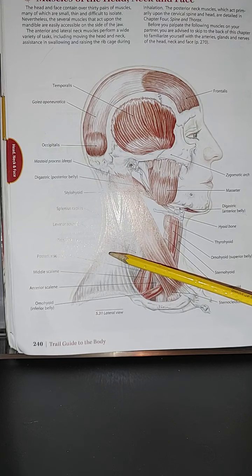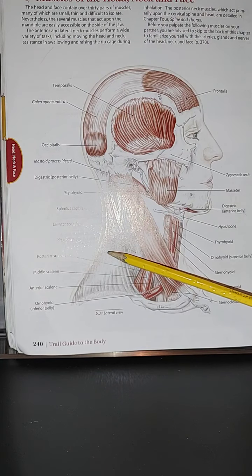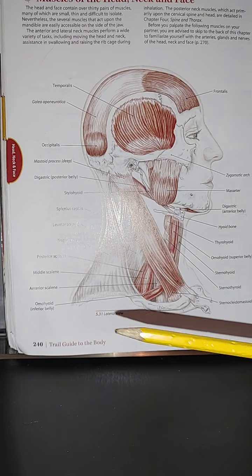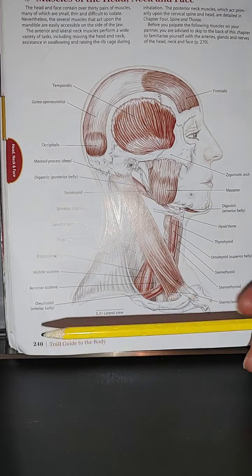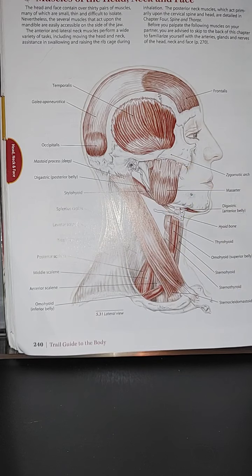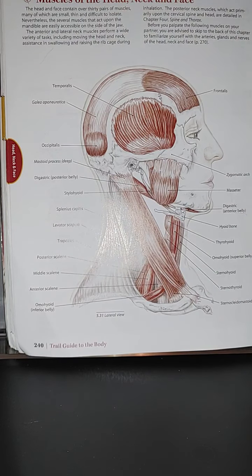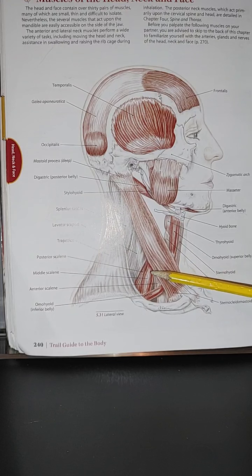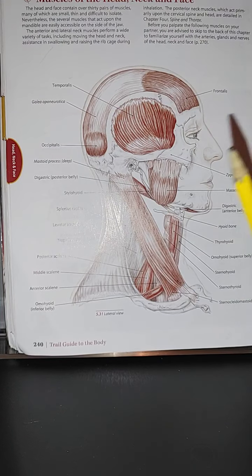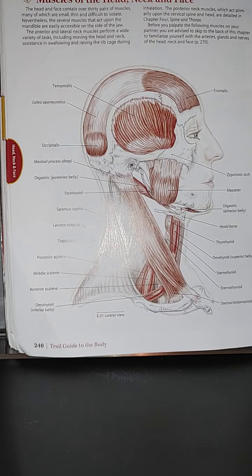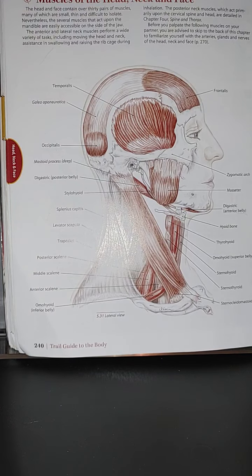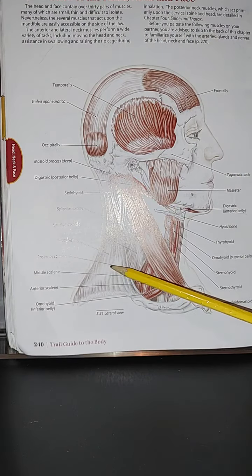As we all know, muscles contract and shorten, and it pulls, but it does not push. So the other antagonist, the other opposing muscle, will have to be doing the pulling so that the muscle that was used for the contracting or movement can be able to relax.